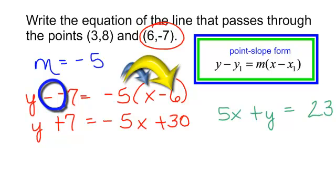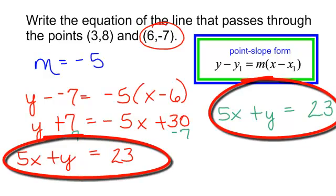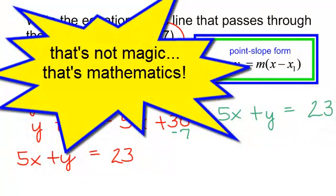To get it in standard form, I am going to quickly add 5x to both sides. And I will have 5x plus y and 30 minus 7 is 23. Would you look at that? And that is not magic. That is mathematics.